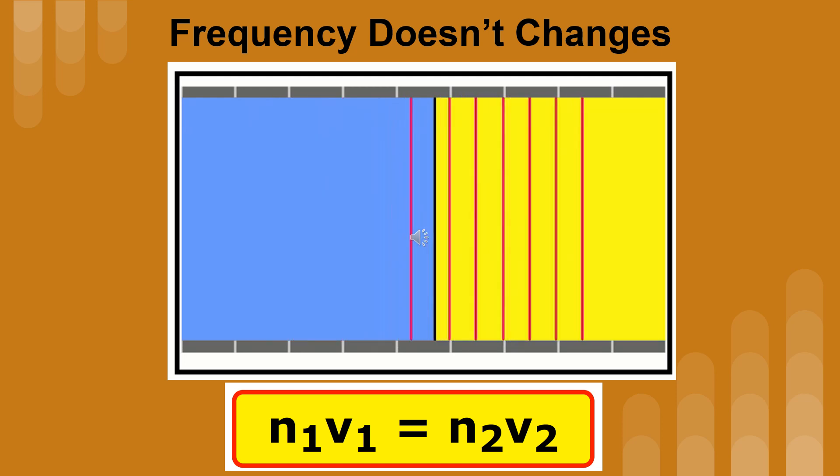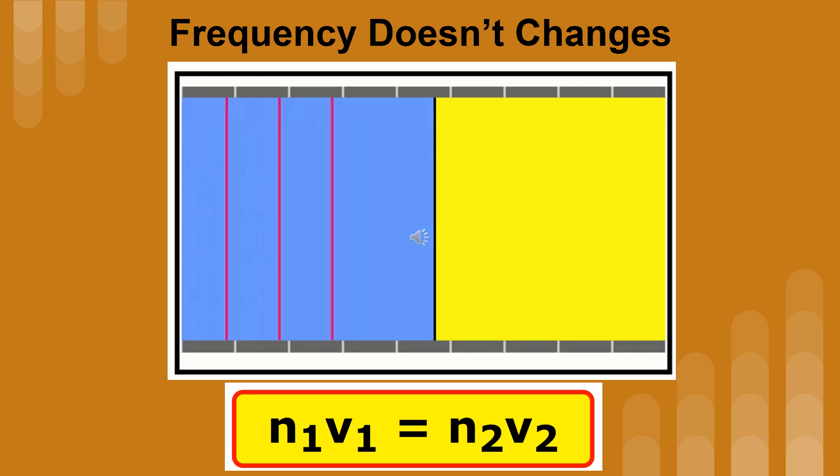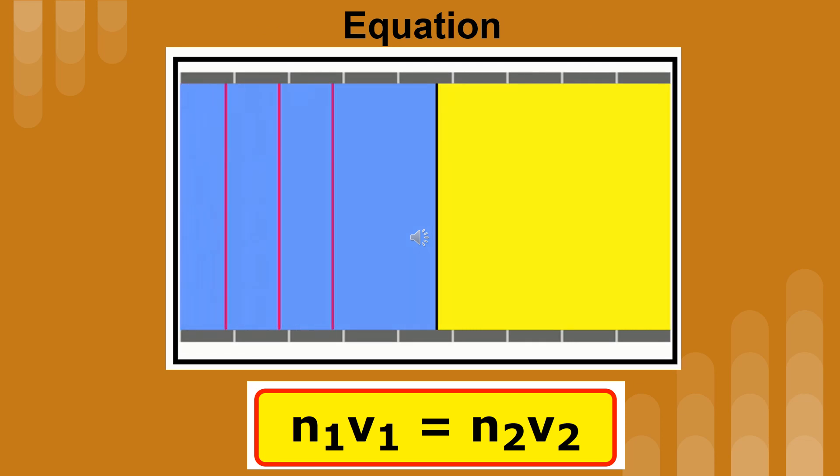While it appears as if the frequency decreases, too, it actually remains the same. Remember that frequency is a measure of the number of cycles that pass a point per second. The frequency remains the same, because while the wavelength decreases, this is offset by the decrease in speed.